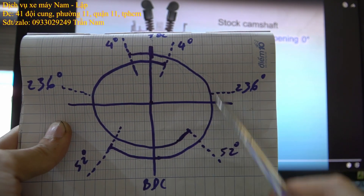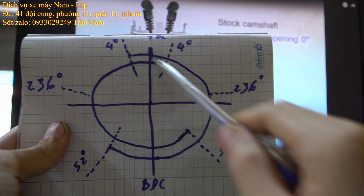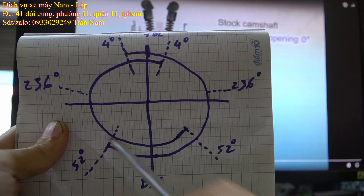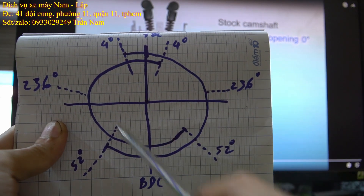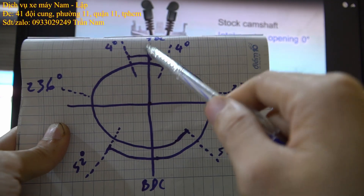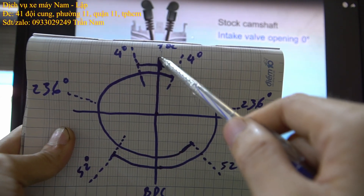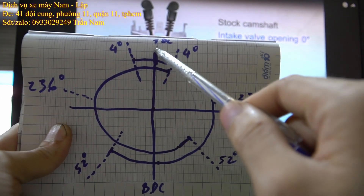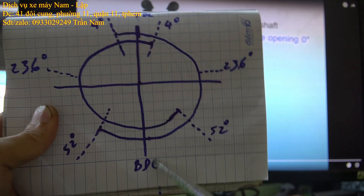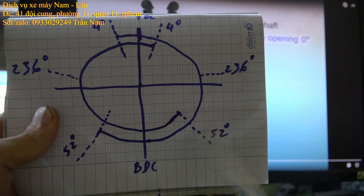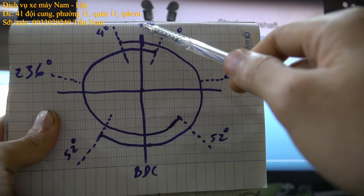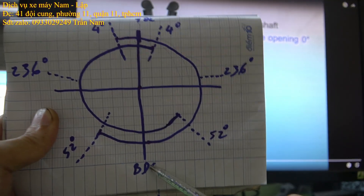Trên cái biểu đồ này, đó chính là 1 vòng quay 360 độ của trục cơ. Cái TDC đó chính là điểm cao nhất - điểm thượng của piston. BDC là cái điểm thấp nhất của piston - điểm chết dưới. TDC điểm chết trên, BDC điểm chết dưới.